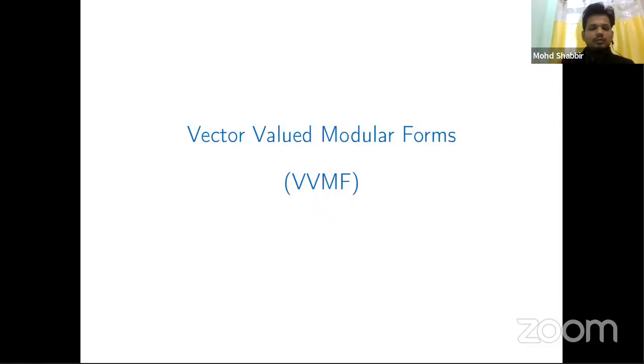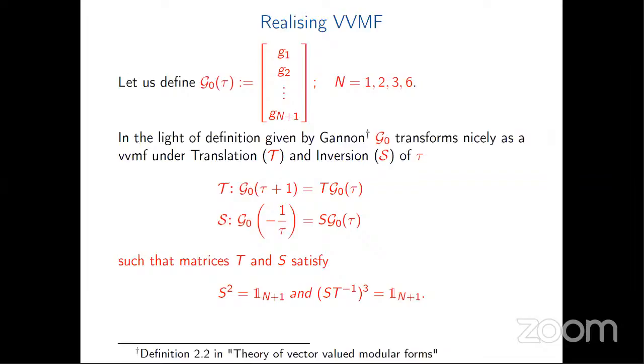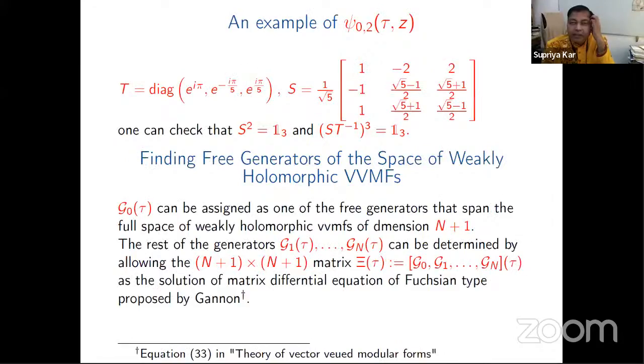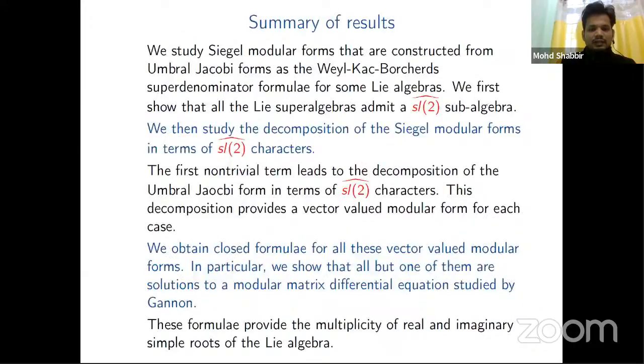On the way to finding new algebras, we ended up finding some nice examples of vector-valued modular forms. These g_1s, g_2s, and others—we have these vector-valued modular forms. They fit nicely with the definition given by Bantay. These are the results.